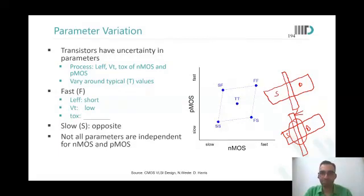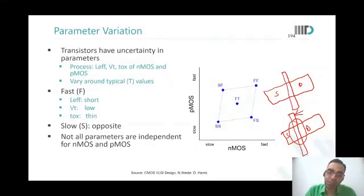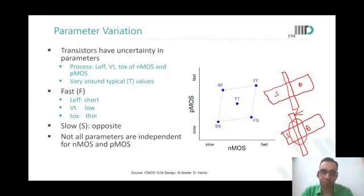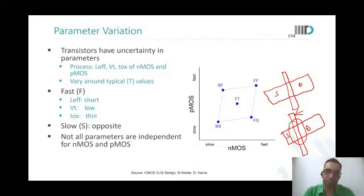If you decrease Vt, you're also increasing the sub-threshold conduction, but the device is fast — the on-current is more. So all these things lead to a fast device. On the other side, larger length, high Vt, and thicker gate oxide lead to a slow device.